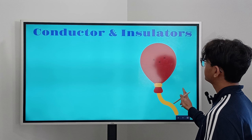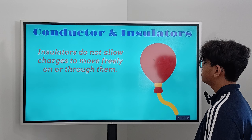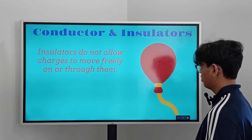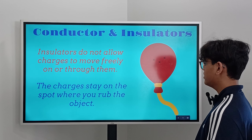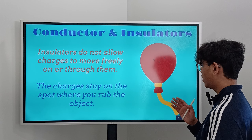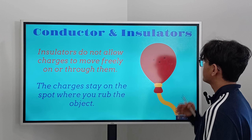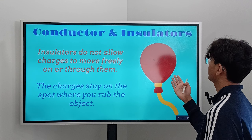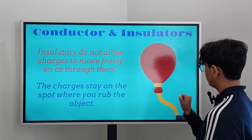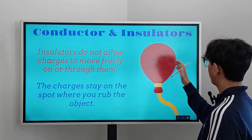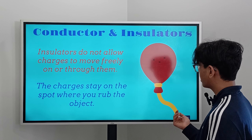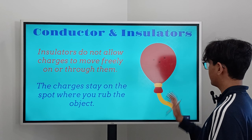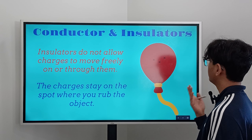Insulators do not allow charges to move freely on or through them — that means the charges stay on the spot wherever you rub the object. A balloon is a perfect example of an insulator. As soon as you rub your head or something onto the balloon, the charges will just stay there and not move anywhere.